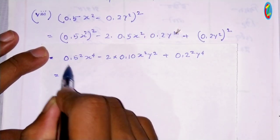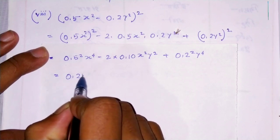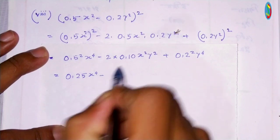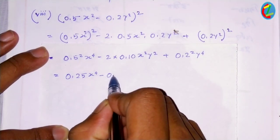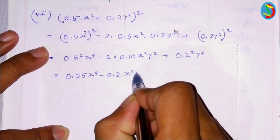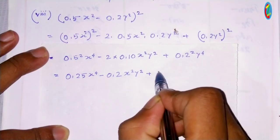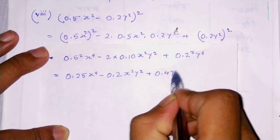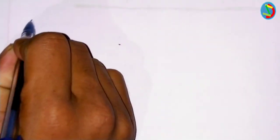The problem is 0.25, or x to the power 4. And 0.2 squared will have 0.04 y to the power 4.